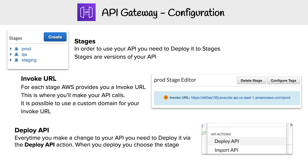Once we've defined our API using resources and methods, the next thing is to actually get our API published. In order to do that, you're going to need a bunch of different stages set up. Stages are just a way of versioning your API for published versions. You normally do this based on your environment — so you'd have production, QA for quality assurance, staging, and maybe one for developers.